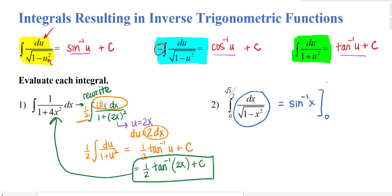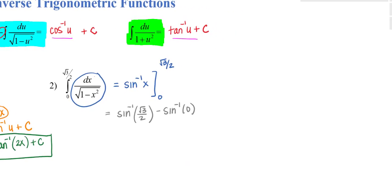And we're going to evaluate this from 0 to square root of 3 over 2. So this will be inverse sine of square root of 3 over 2 minus inverse sine of 0. And please remember that inverse trig is solving for an angle. So I will draw this out.